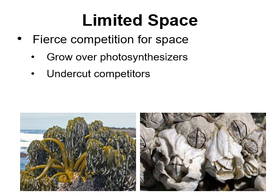You can also undercut your competitors. Here you see two different types of barnacles — this barnacle is growing underneath the other one and slowly popping it off the rocks. Eventually both barnacles get popped off and they're dead. This is a picture of palm kelp, and any algae underneath it is essentially done, because they're not going to get the light they need with that palm kelp above them.